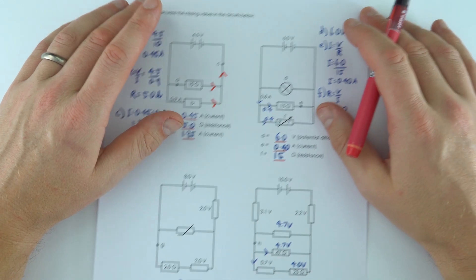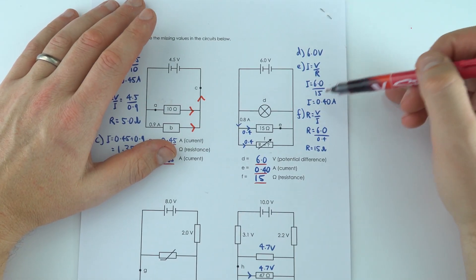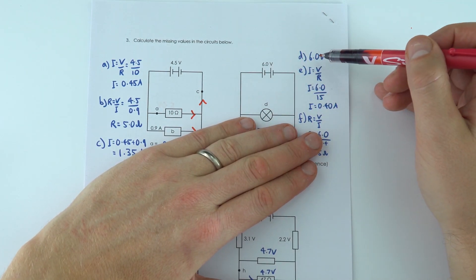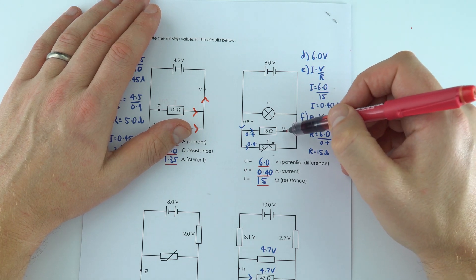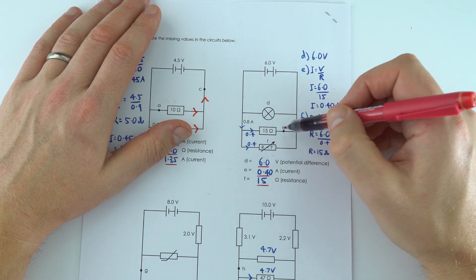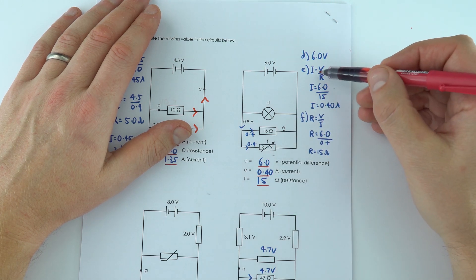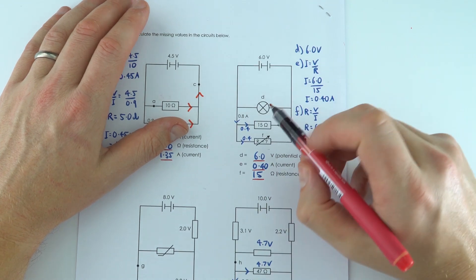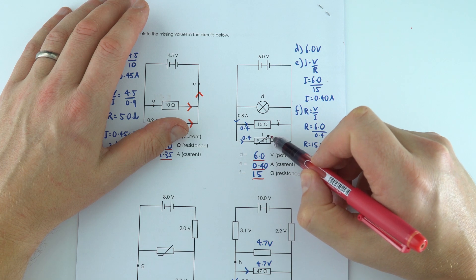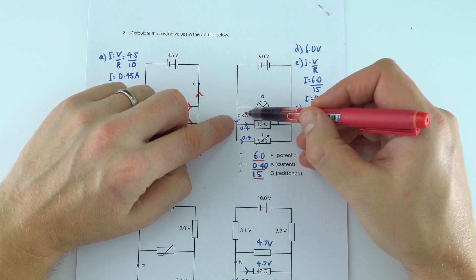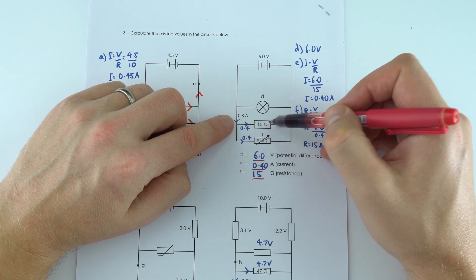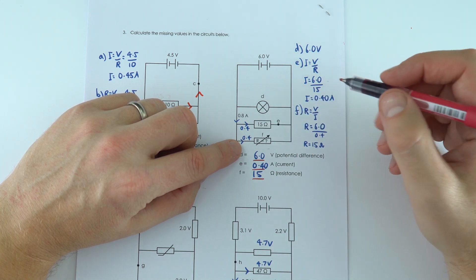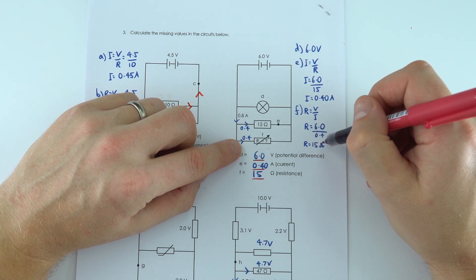And again for the other questions all I did was just work around using these different values here. So at D we're going to have the same potential difference as we do across the cells of 6 volts. Then to find the value of E, the current, we know the potential difference across that 15 ohm resistor was 6, and therefore I equals V over R, 6 over 15 which was 0.4. And to find the resistance of this variable resistor that we had at F, if we know there's 0.8 of an amp there, 0.4 of an amp is going through this resistor, then that also means that there's 0.4 of an amp going down here, and that means that the resistance is equal to 15 ohms.